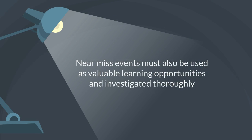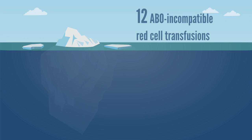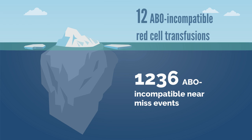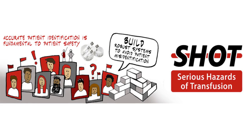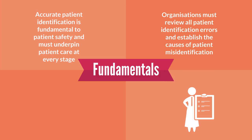Near-miss events must also be used as valuable learning opportunities and investigated thoroughly. In the past four years, there have been 12 ABOI red cell transfusions, but over 1,200 near-miss events which had the potential to result in an ABOI transfusion and the death of a patient. The majority of these cases involved patient identification errors. Accurate patient identification is fundamental to patient safety and must underpin patient care at every stage to ensure a safety-focused culture.